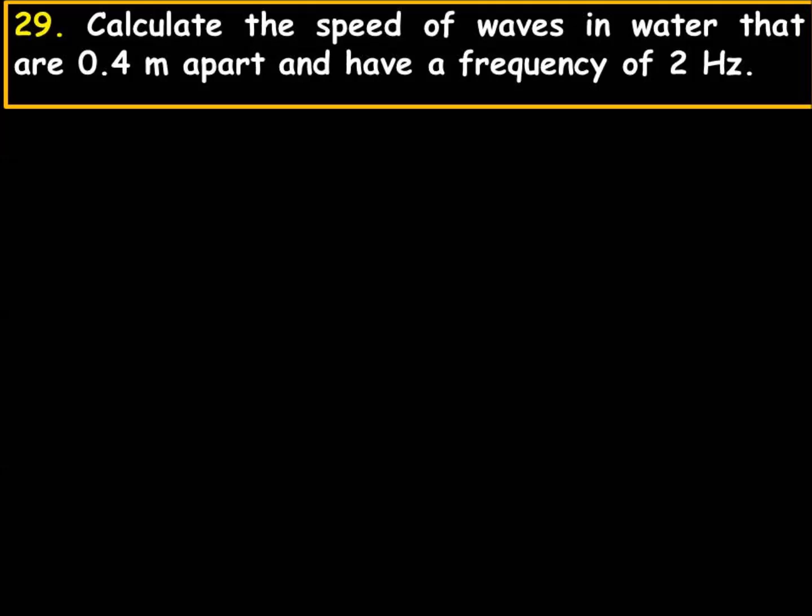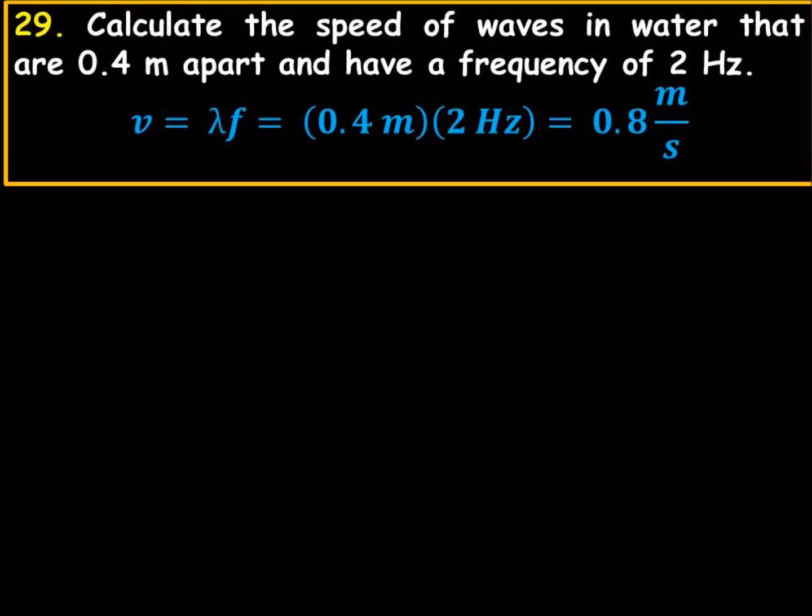Calculate the speed of waves in water that are 0.4 meters apart and have a frequency of 2 hertz. So, in other words, two cycles per second. Remember, that's what hertz means, cycles per second. Now, we know that, while we're waiting for the next slide, that velocity equals wavelength times frequency.